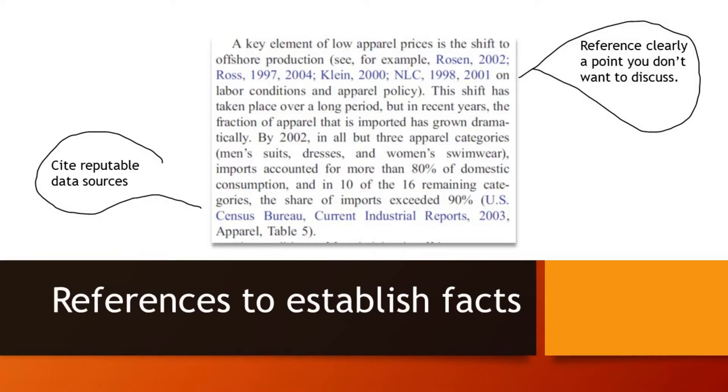All along she uses references. Here's an example of using references to establish facts: the fact that low apparel prices are possible because of a shift towards offshore production — she provides references on that point without going into a lot of detail, which saves time. She also cites data showing that basically all clothing comes from offshore production, and quotes the source. So if you're reading and want to check, you know where to go. But you can also just trust these sources and move on to think about the conclusions.